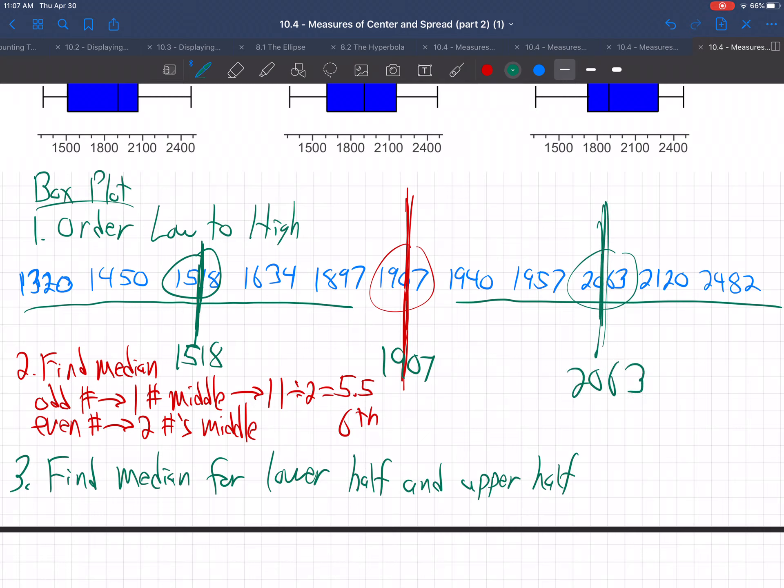So it breaks the data set, notice, into four sections. Do you see that? This is the first quarter. So we call this Q1. This is the second quarter. We call this Q2. It's a football game or a basketball game. Break it into four quarters. This is the third quarter. Call this Q3. This is the fourth quarter. Breaks the data set into four sections that all have the same number of values in each of those sections. That's what a box plot does.